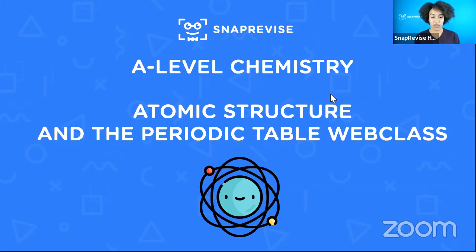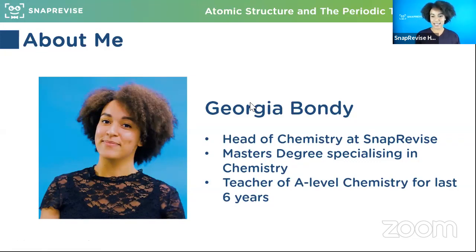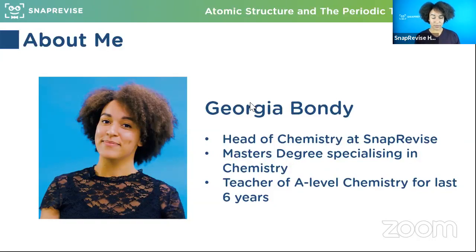Welcome everyone to this web class. It's going to be on atomic structure and the periodic table - really the most basic things you need to know for chemistry. My name is Georgia. I'm head of chemistry here at Snap Revise. I have a combined bachelor's/master's in natural sciences, which is a degree for people that cannot pick - a merge of chemistry, a little bit of neuroscience, and some other stuff, but mostly chemistry. I've been teaching and tutoring for the last six years.